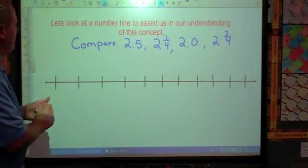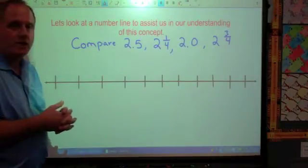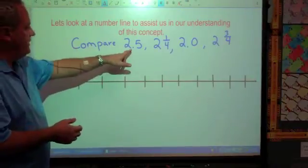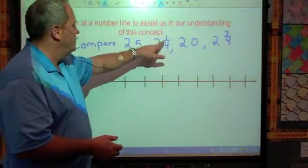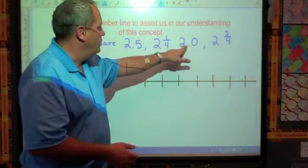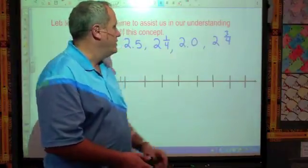I came up with a number line here and it says, let's look at a number line to assist us in our understanding of this concept. It says, compare 2.5, so two and five tenths exactly, two and one quarter, 2.0 or two, just a whole, no fraction there, and two and three fourths.